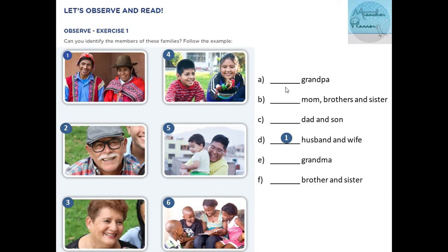Let's see the options. A: grandpa — grandfather, abuelo. B: mom — mother, mamá; brothers — hermanos; and sister — hermana. C: dad and son — padre/papá e hijo. D: husband and wife — esposo y esposa. E: grandma — abuela. F: brother and sister.